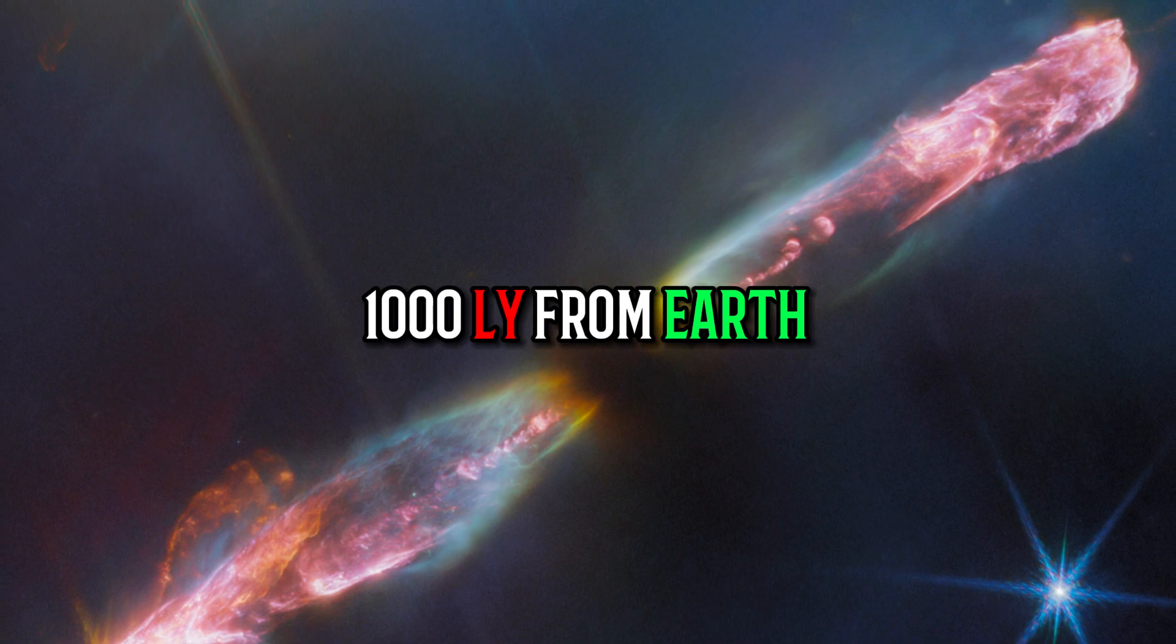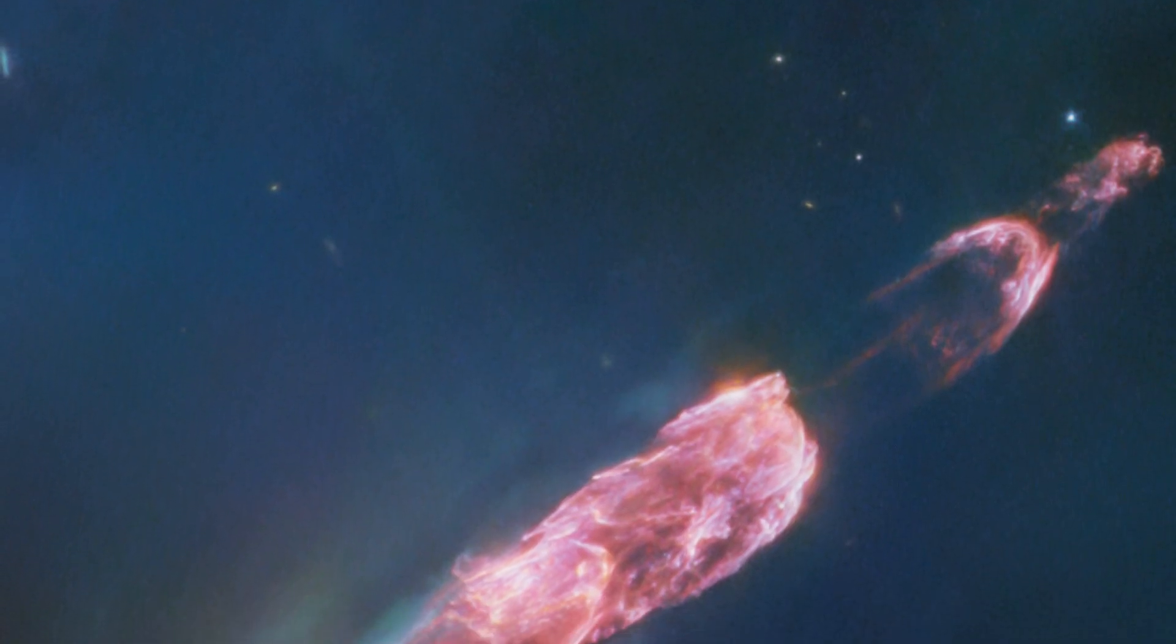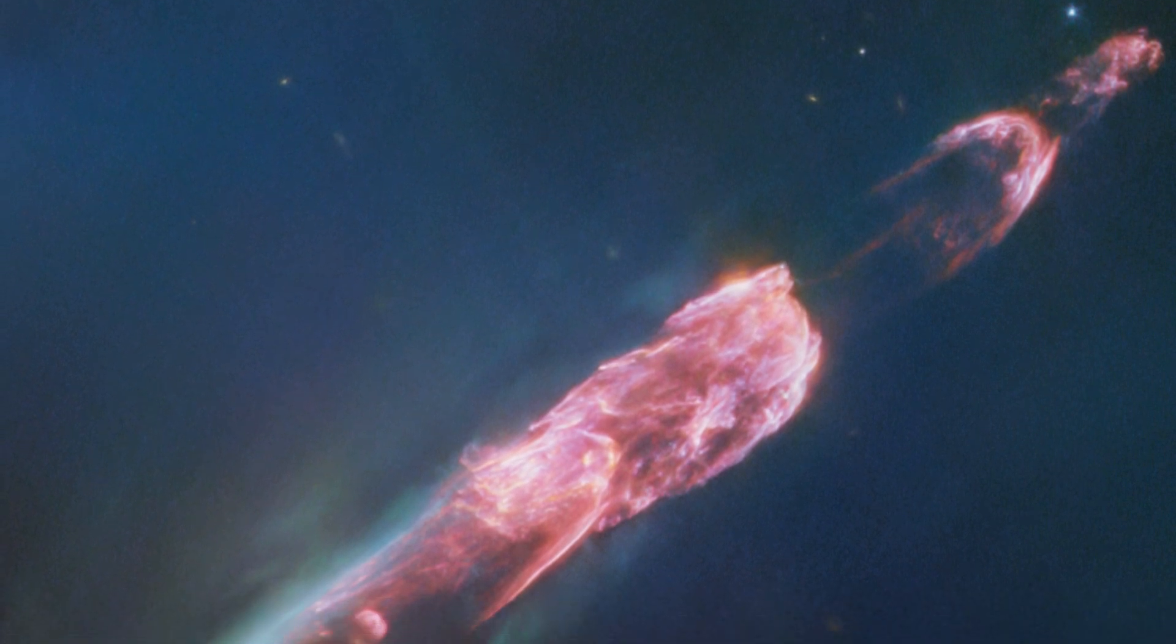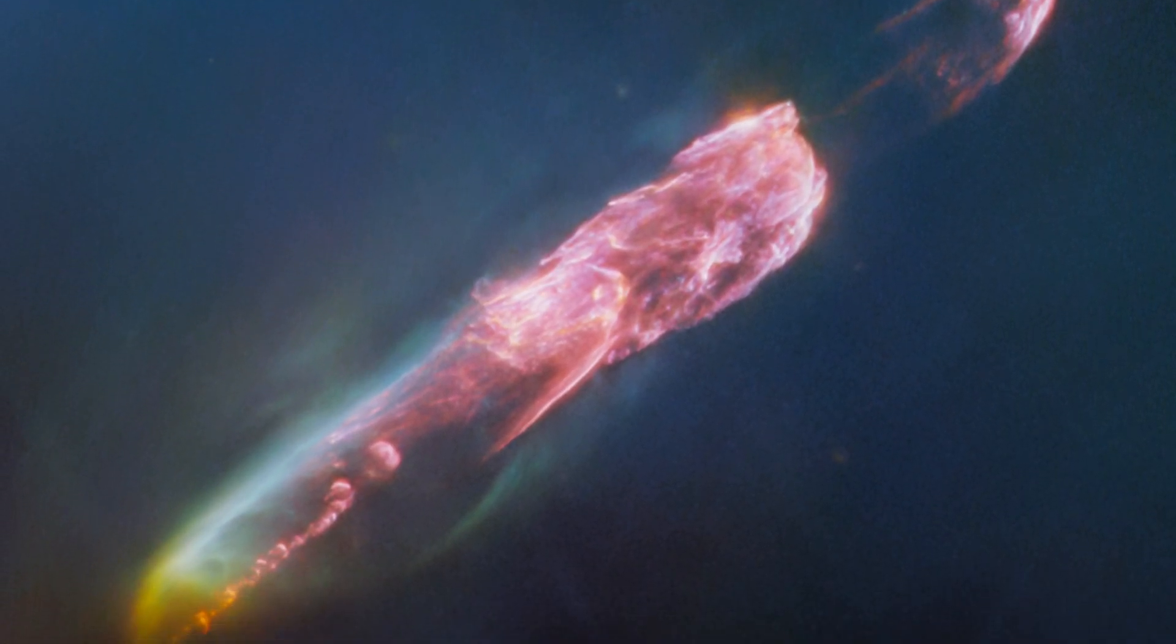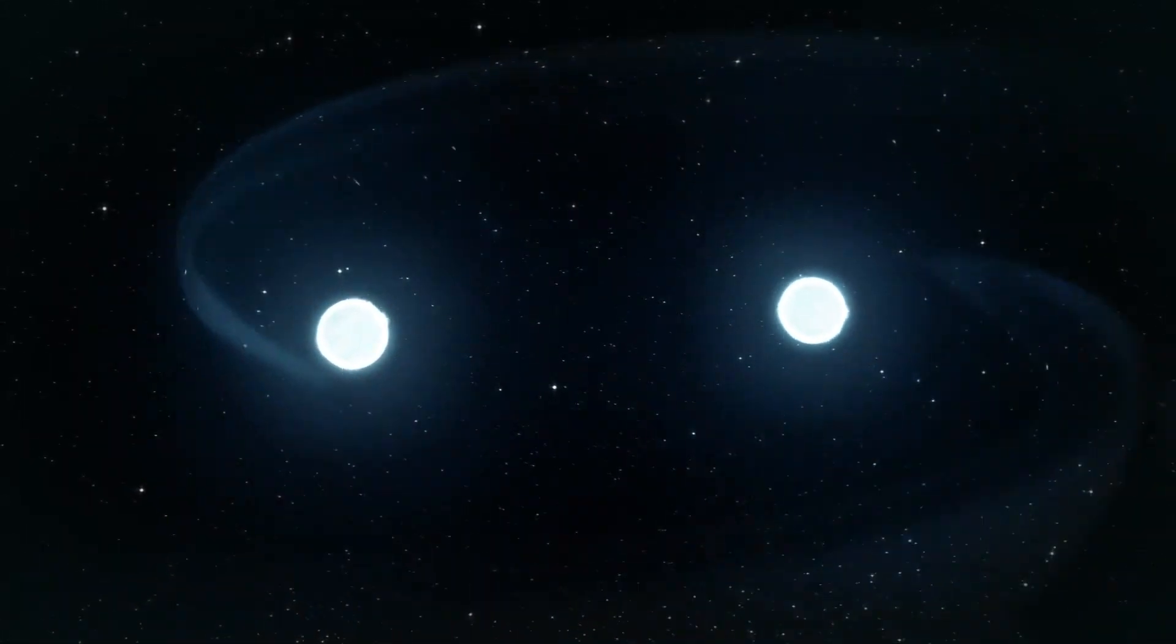The star is located about 1,000 light years away from Earth, in the constellation Perseus. The jet in the image is one of the most collimated jets ever observed, meaning it is very narrow and focused. It may also indicate that the protostar is actually a binary system, composed of two stars orbiting each other.